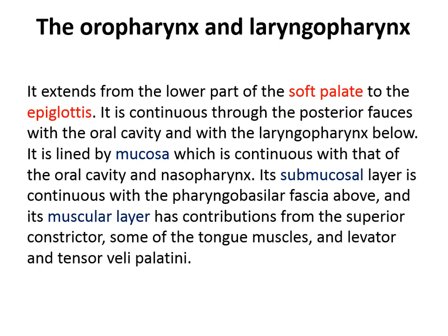The Oropharynx extends from the lower part of the soft palate to the epiglottis and is continuous through the posterior forces with the oral cavity. It is lined by the mucosa and submucosa which is continuous with the pharyngeal fascia above, and a muscular layer continuation from the superior constrictor, tongue muscles, and levator and tensor veli palatini.